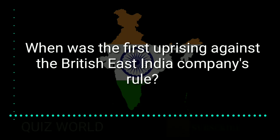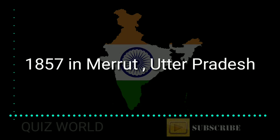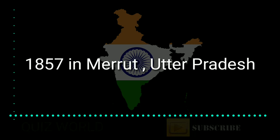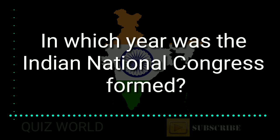The first question: when was the first uprising against the British East India Company's rule? Answer is 1857, in Meerut, Uttar Pradesh.